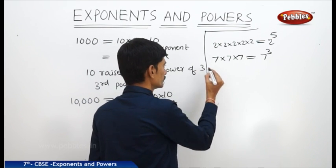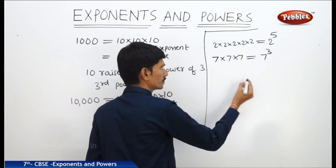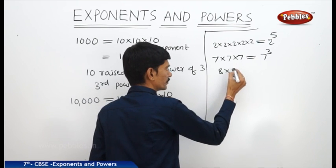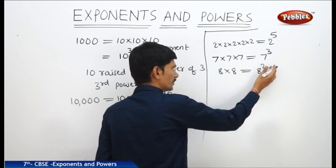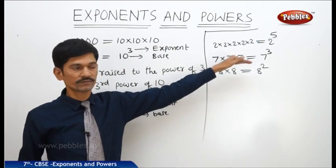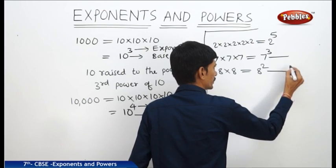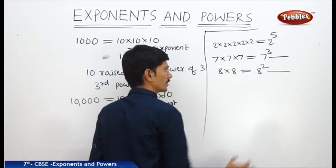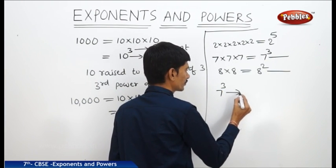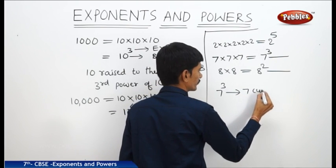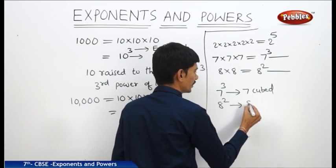There are other names for exponent 2 and exponent 3. For example, if 8 is multiplied 2 times — 8 × 8 — this equals 8 to the power of 2, which is the second power of 8, or '8 raised to the power of 2.' Now, 7 to the power of 3 is also called '7 cubed,' and 8 to the power of 2 is also called '8 squared.'